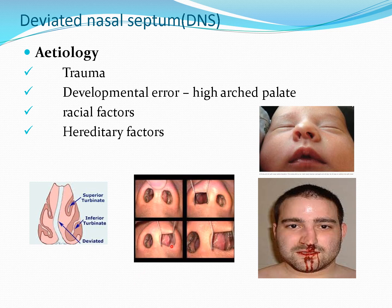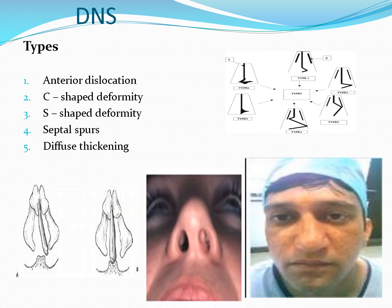Deviated nasal septum: in terms of etiology, the main cause is trauma, which can be developmental or birth trauma. You can see in this picture a patient after birth having deflection of the nasal septum. It is also more common in certain races.